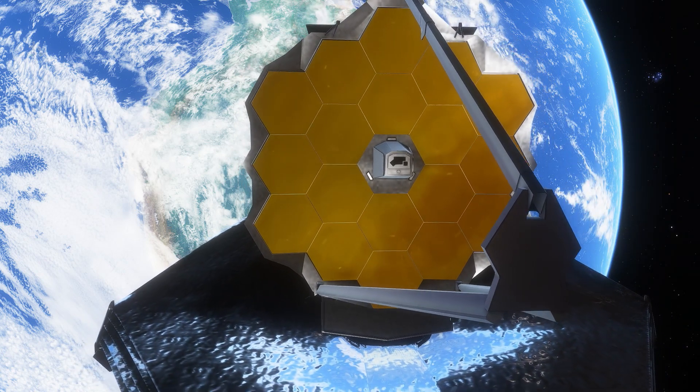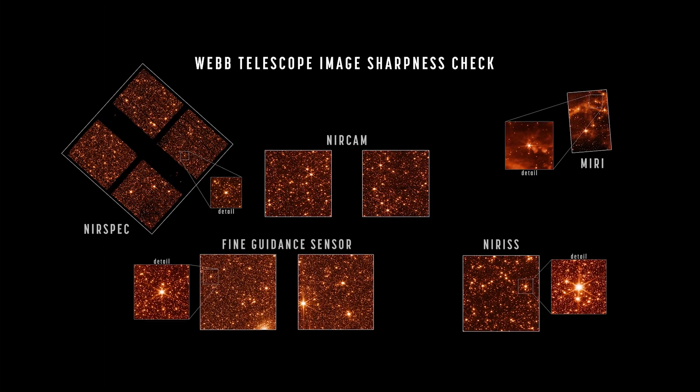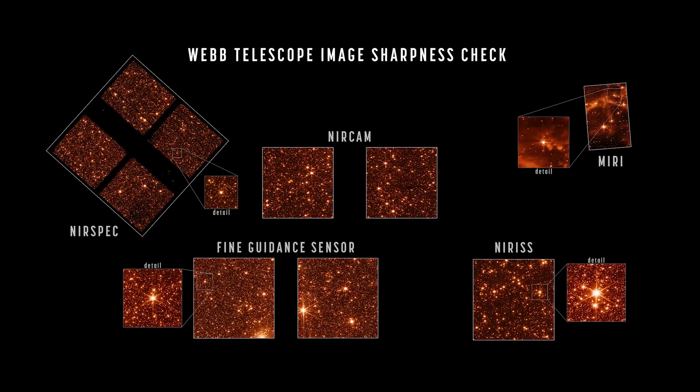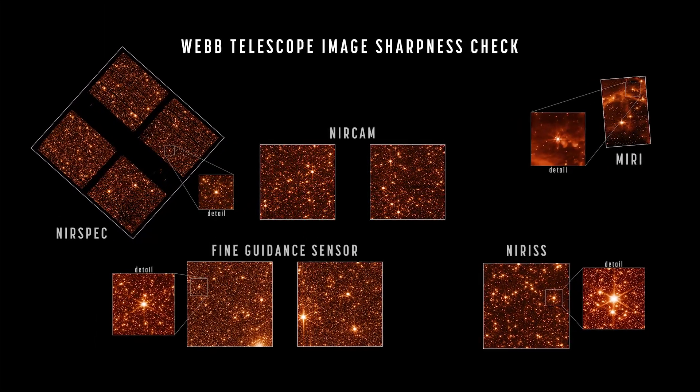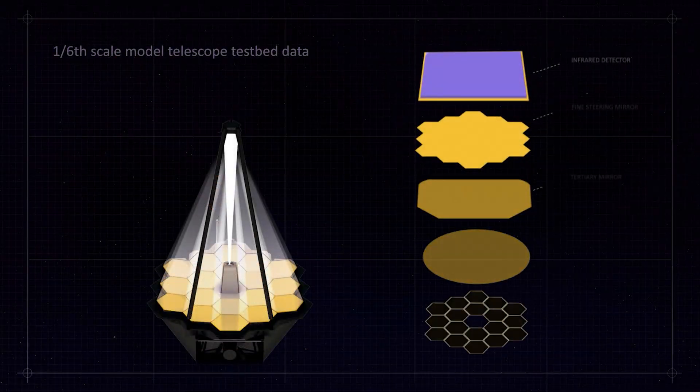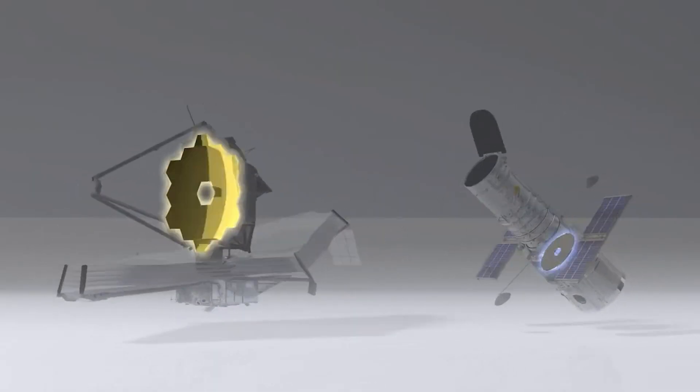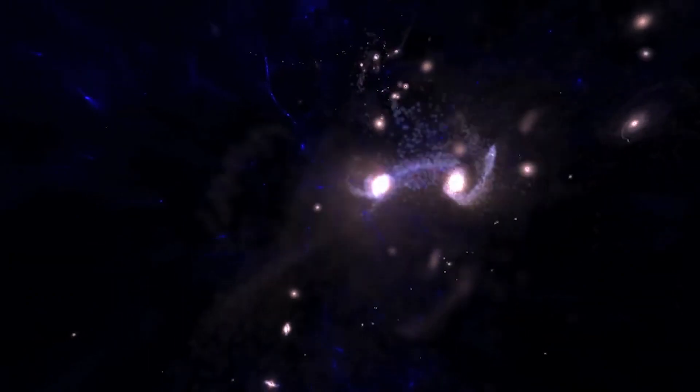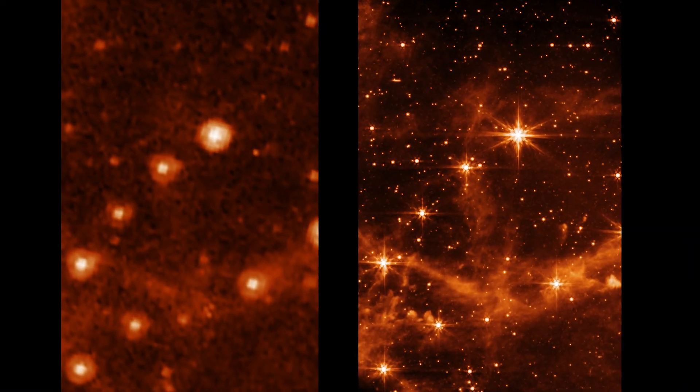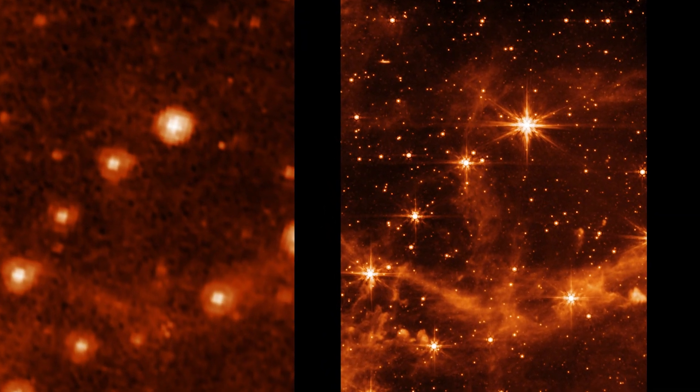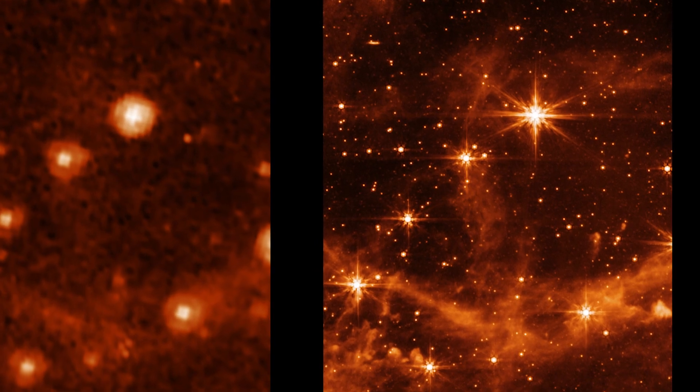As a result, each of the James Webb Space Telescope's science instruments captures an image densely packed with stars. As each instrument is shown with the telescope's focal plane, they all gaze at somewhat different parts of the skies. Colors can be reconstructed using images taken by space telescopes. Also, they can be utilized to draw attention to specific aspects. NASA's engineers employed a scarlet color scheme to accentuate the contrast.